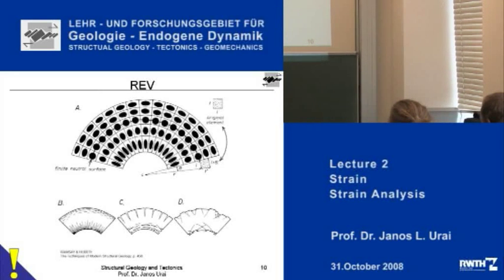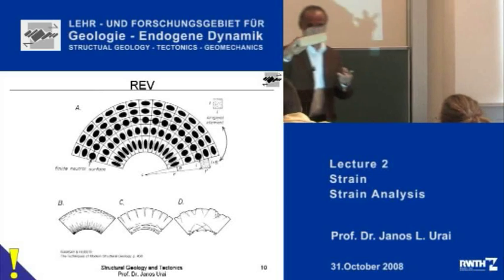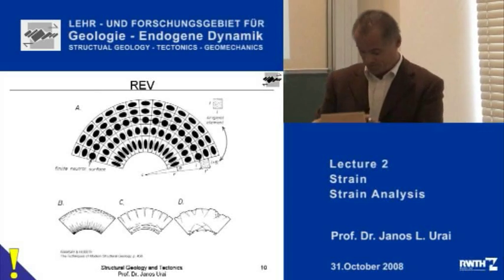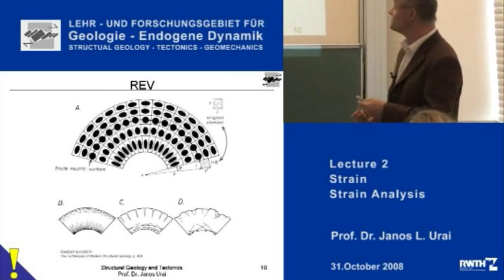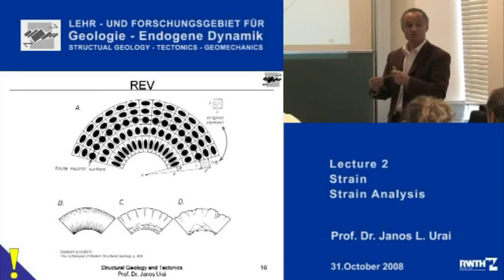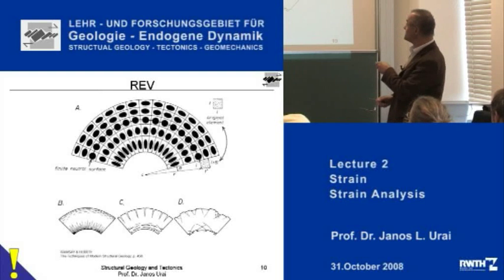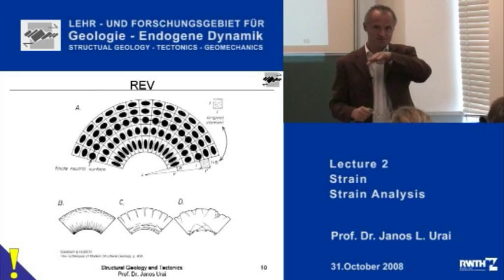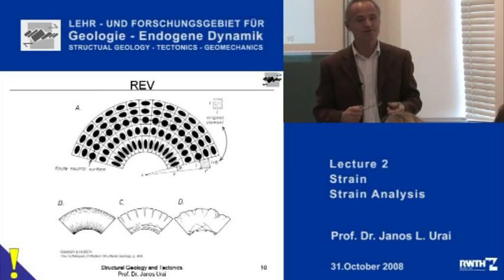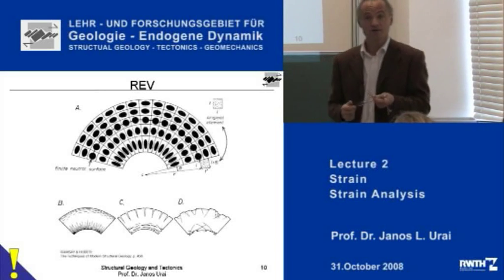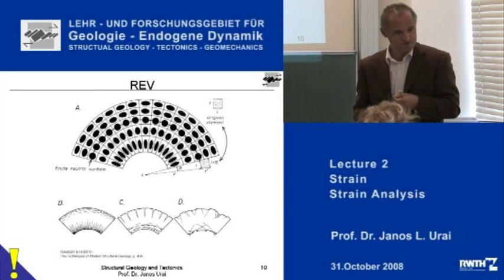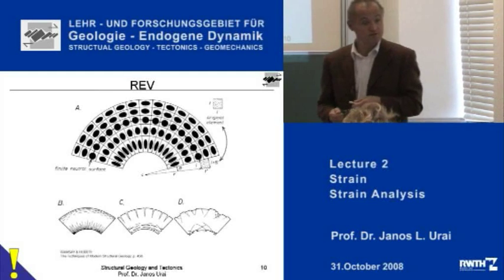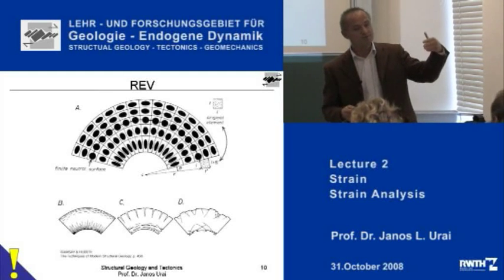There is a very simple demonstration. I can take the sponge and bend it. If I would paint little circles on the sponge, I would see that on the outside the circles will stretch, and on the inside the circles will shorten, and in the middle there is this neutral line. This is quite well known in mechanics. So the deformation here is not homogeneous — it is heterogeneous. But inside each of these elements it is homogeneous; it changes from element to element.